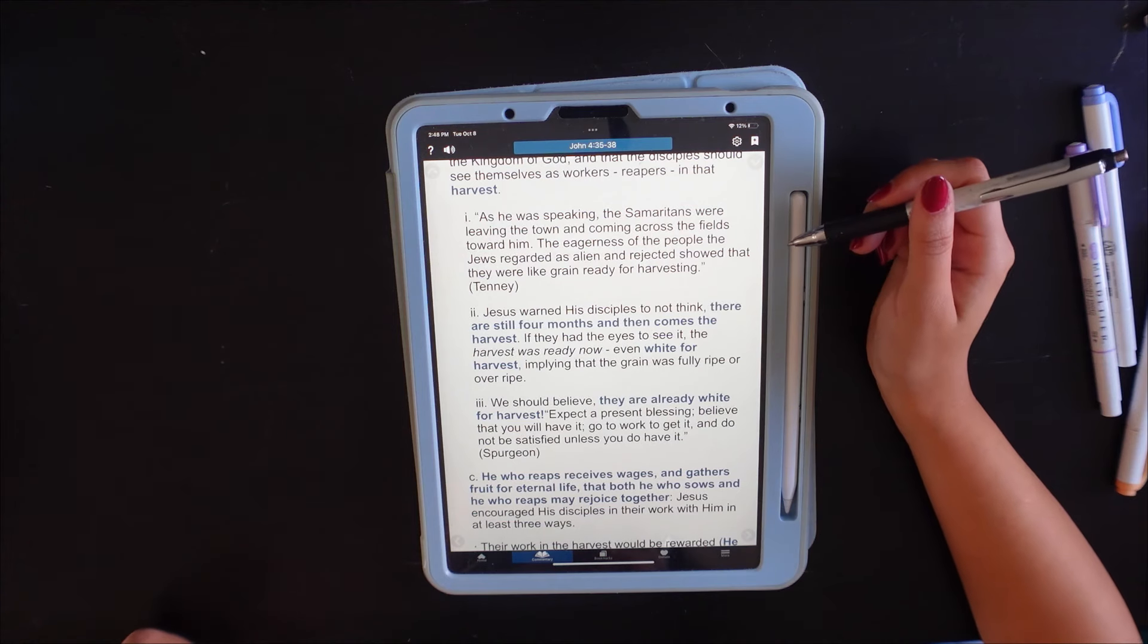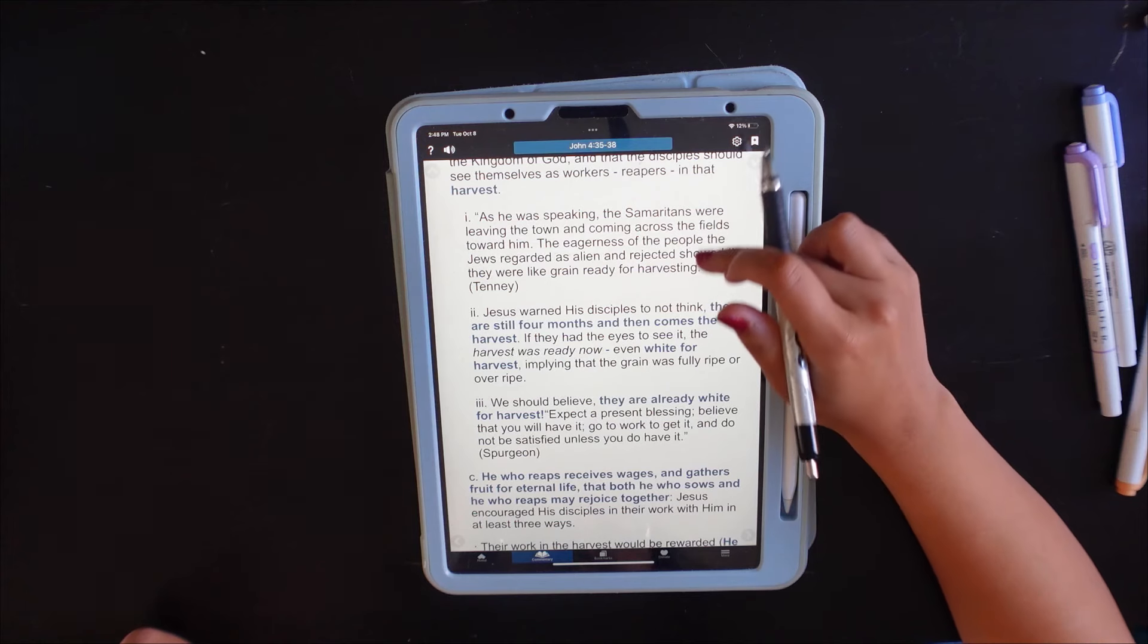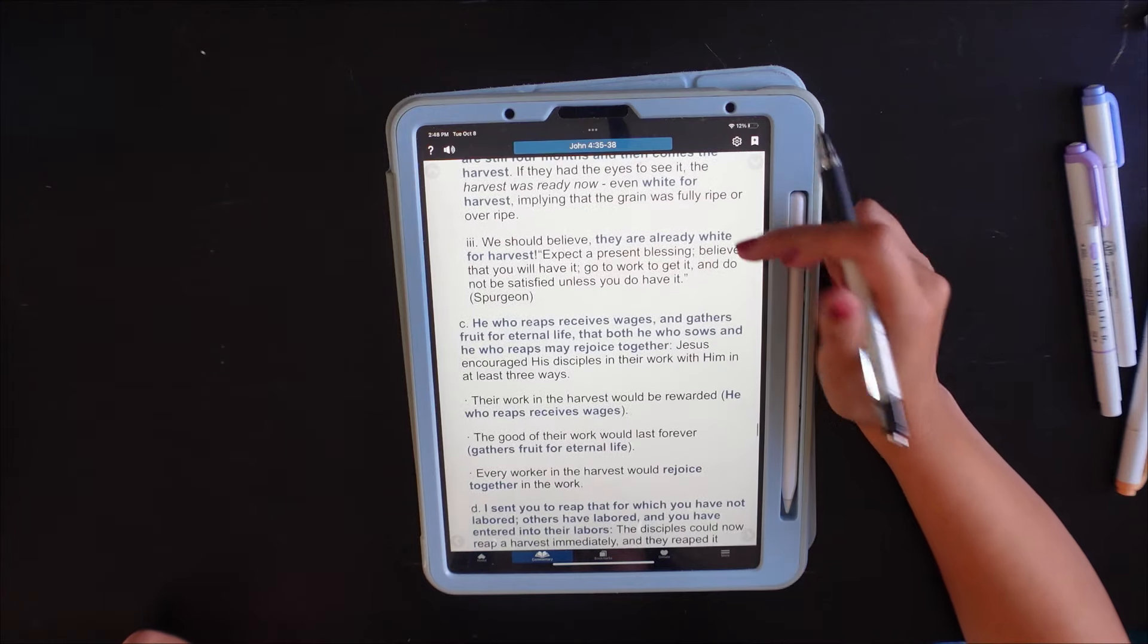As he was speaking, the Samaritans were leaving the town and coming across the fields towards him. The eagerness of the people that Jews regarded as alien and rejected showed that they were like the grain ready for harvesting. Jesus warned his disciples not to think there are still four months and then comes the harvest. If they had the eyes to see it, the harvest was ready now, even white for harvest, implying that the grain was fully ripe or even overripe.